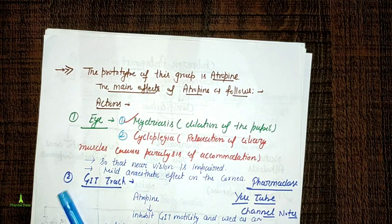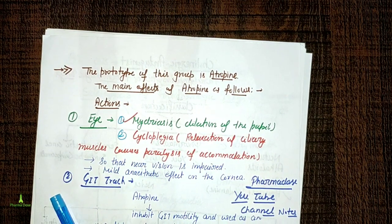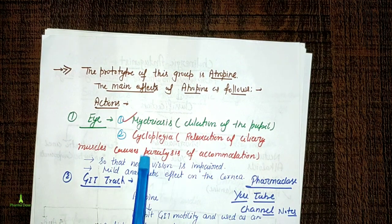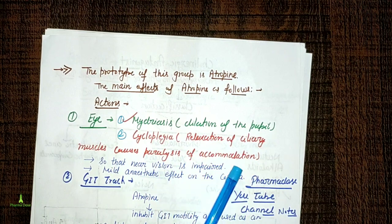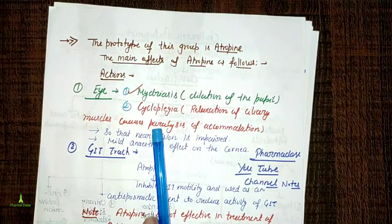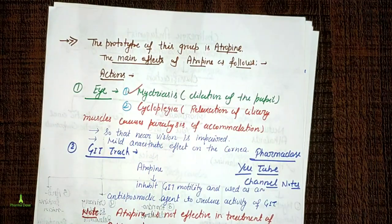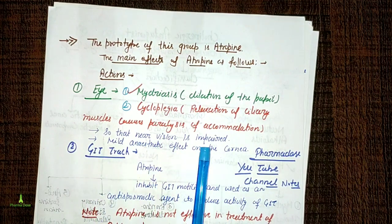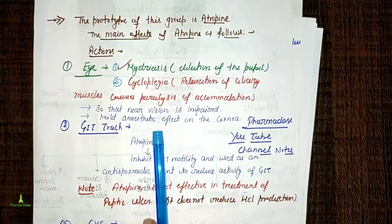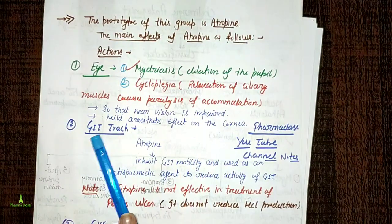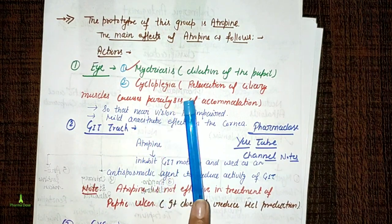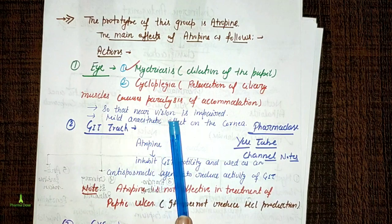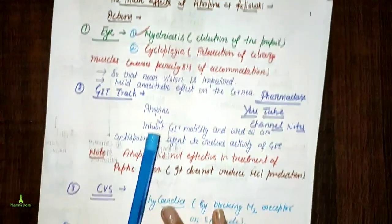The second effect is cycloplegia. Only atropine produces a cycloplegic effect — dilation and paralysis of the ciliary muscles, causing paralysis of accommodation, so that near vision is impaired. The third effect is a mild anesthetic effect on the cornea. So atropine's eye effects are: mydriasis, cycloplegia, impaired near vision, and mild corneal anesthesia.